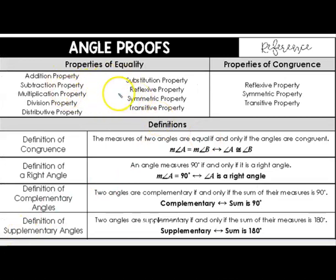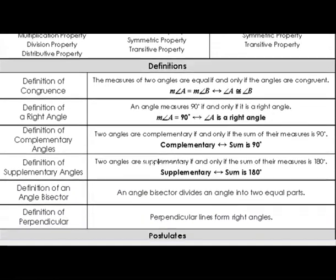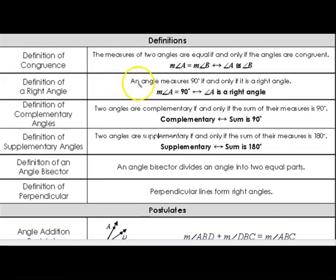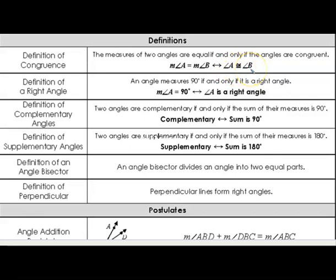These properties of equality we've looked at pretty extensively, and properties of congruence as well. The definition of congruence is pretty much the same as what we've been looking at. Before it was dealing with congruent segments, and now it just applies to congruent angles. So if the measure of angle A is equal to the measure of angle B, then angle A is congruent to angle B — no different, really, than what we've already looked at.